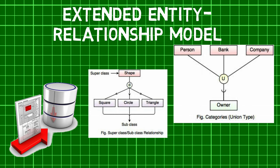Second is Union or Category Type Extension. It represents a single Superclass or Subclass relationship with more than one Superclass. For example, while booking a car with a loan, Owner is a subset of the Union of three Superclasses: the Company, Bank, and the Person.